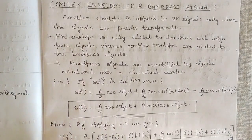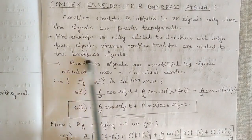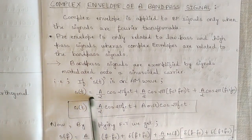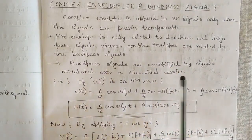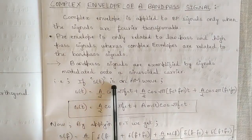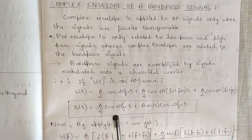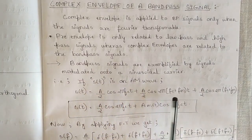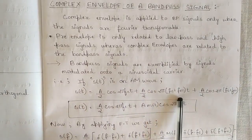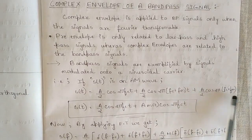Band-pass signals are defined by frequencies generated in bands — with respect to high and low frequencies, whatever band frequency is obtained, it operates in that region. Band-pass signals are exemplified by signals modulated onto a sinusoidal carrier. That is, if s(t) is an AM wave — an amplitude-modulated wave — then s(t) is given as (a/2)·cos(2πfc·t) plus (a/2)·cos(2π(fc + fm)·t) plus (a/2)·cos(2π(fc − fm)·t).